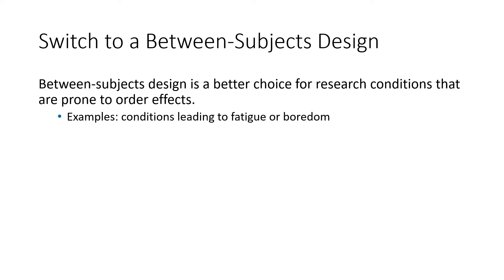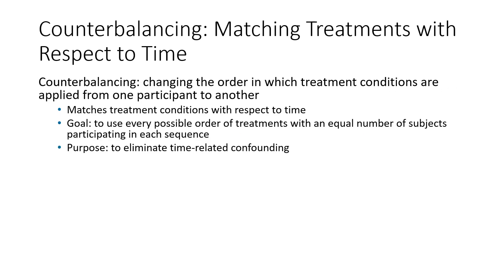Another option is to switch to a between subjects design, especially if you know that order effects are going to be significant. If you know that just two trials will lead to fatigue, boredom, or strong practice effects, then you may want to use between subjects rather than within subjects. However, if two trials won't lead to too much fatigue or boredom — maybe just a little bit of each — then what can you do to control for those smaller effects? One technique is counterbalancing.